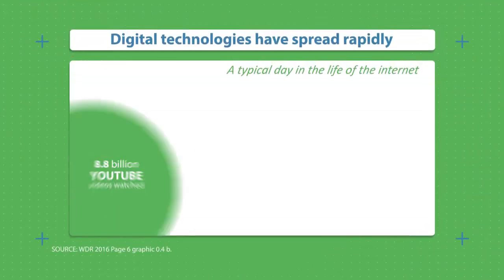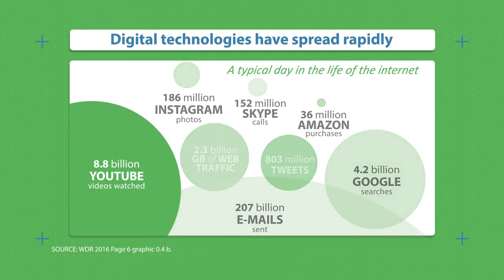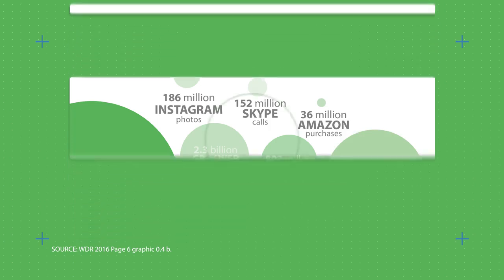Digital technologies have spread rapidly in much of the world. More than 40% of the world's population has access to the internet, with the number of internet users tripling in the last decade — from 1 billion in 2005 to an estimated 3.2 billion in 2015. 8.8 billion YouTube videos are watched daily, and 4.2 billion Google searches are performed every day. Such increased access to the internet provides opportunities that were previously out of reach to the poor and disadvantaged.